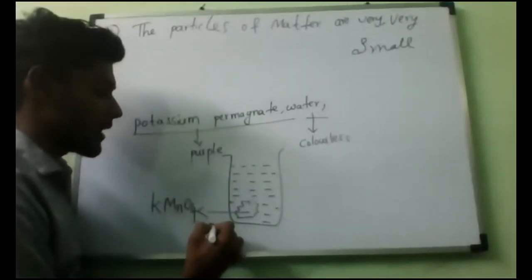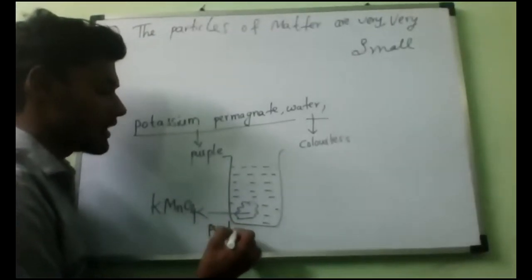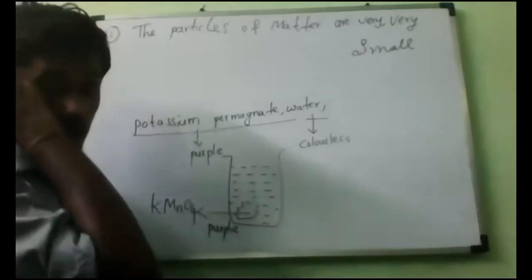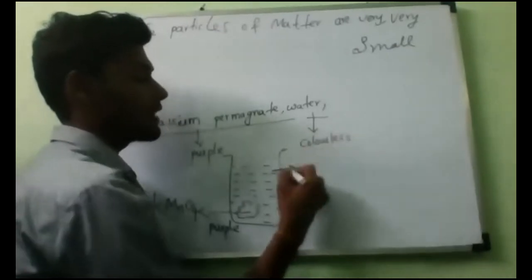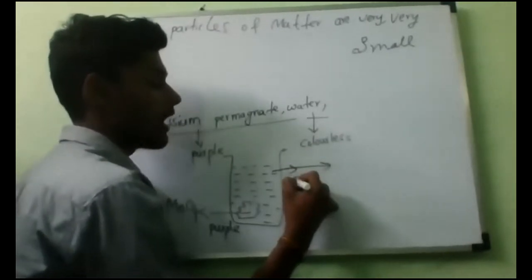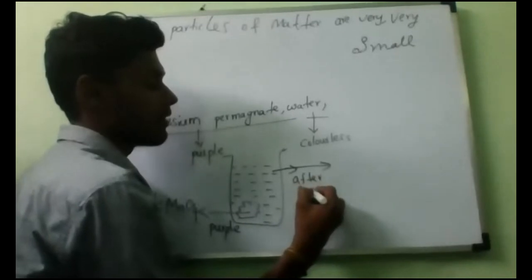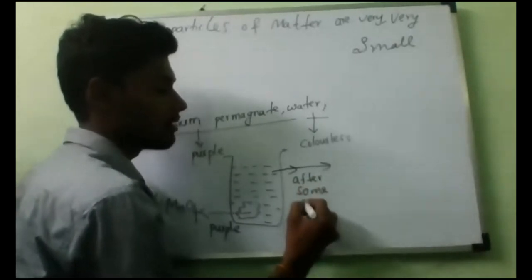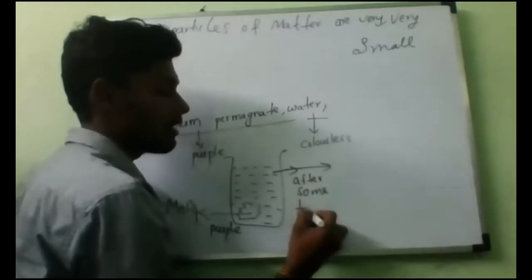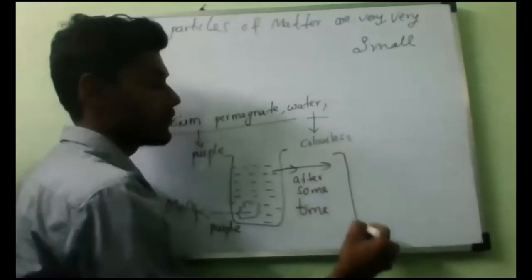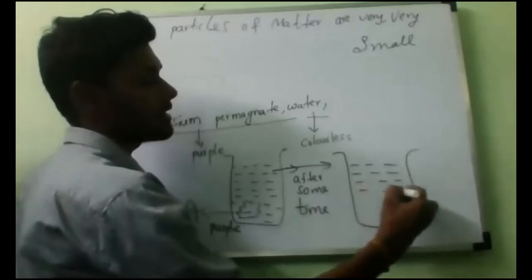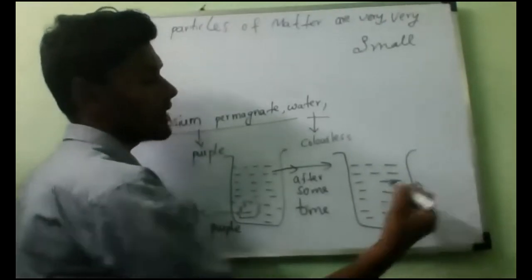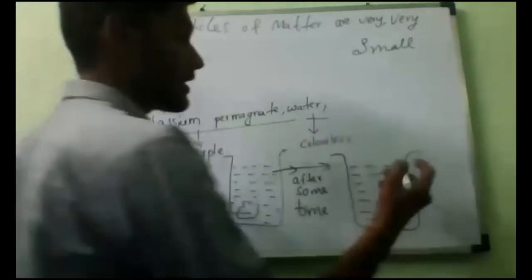This potassium permanganate is in purple color and slowly it will start dissolving in water. Finally, after a certain time, this full beaker of water will turn into complete purple color. So it will completely turn into purple color water.